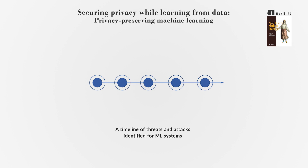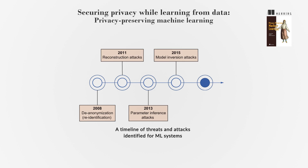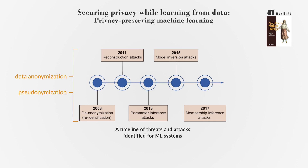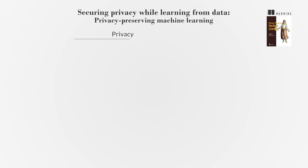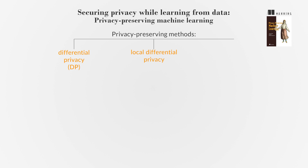In the realm of machine learning, privacy is a paramount concern due to a multitude of threats and attacks. These include de-anonymization, reconstruction, parameter inference, model inversion, and membership inference attacks. To mitigate these risks and protect privacy, various techniques such as data anonymization and pseudonymization can be employed. Additionally, privacy-preserving methods like Differential Privacy (DP), Local Differential Privacy (LDP), and privacy-preserving synthetic data generation can help safeguard sensitive information from inference attacks.